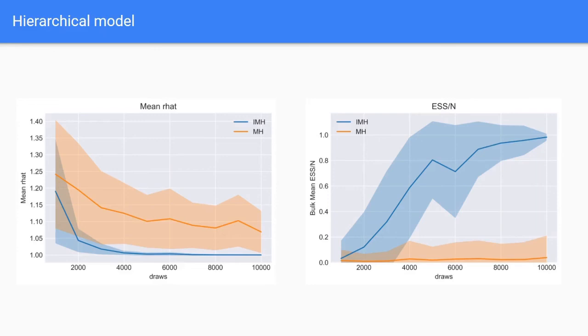We also ran SMC with both of these kernels on the hierarchical model built from the radon dataset. When plotting R-hat as a function of draws, we can see that for the independent Metropolis-Hastings kernel, R-hat falls sharply and beyond 4000 draws R-hat approaches 1. On the other hand, the Metropolis-Hastings kernel had a poorer performance with this diagnostic. When we look at the effective sample size, we see a similar picture where the independent Metropolis-Hastings kernel approaches 1 when the draws increase, while the effective sample size of the Metropolis-Hastings kernel stays close to 0.